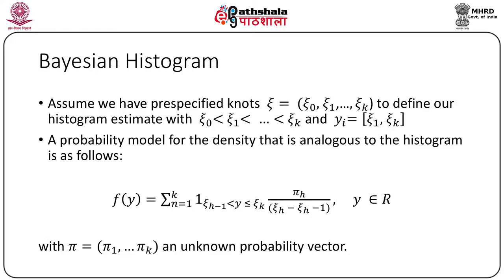In a Bayesian histogram we assume pre-specified knots c_0, c_1, ..., c_K to define the histogram estimate, with c_0 < c_1 < ... < c_K. A probability model for the density analogous to the histogram can be expressed as f(y) = sum over h of the indicator that y belongs to (c_{h-1}, c_h] times pi_h over (c_h minus c_{h-1}), for h from 1 to K, where pi = (pi_1, ..., pi_K) is an unknown probability vector.